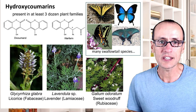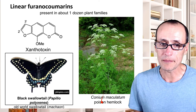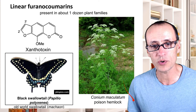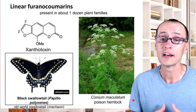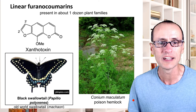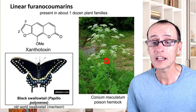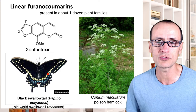Linear furanocoumarins are toxic to humans as well. Poison hemlock was what Socrates drank a brew of to commit suicide back in ancient Greek times — don't drink poison hemlock. On the other hand, species like the black swallowtail, an old world swallowtail present in Europe, part of the Papilionid group, have the ability to feed on these plants. It's the caterpillars that are doing the feeding; the adults mostly nectar and lay their eggs.